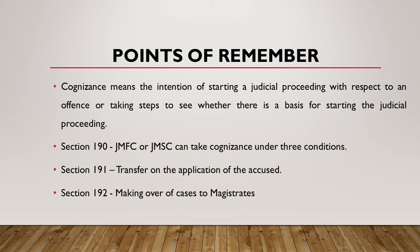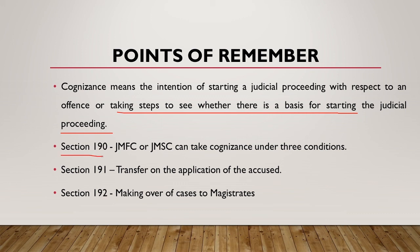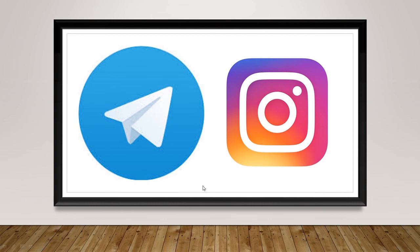Let us recap what we have covered in this video. First, cognizance means the intention of starting a judicial proceeding with respect to any offense, or taking steps to see whether there is a basis for starting the judicial proceeding. Then we saw Section 190, which tells us that JMFC and JMSC can take cognizance under three conditions. Section 191 deals with transfer on the application of the accused. And in Section 192 we dealt with making over of cases to magistrates, which the CJM can do by assigning cases to any subordinate magistrate.